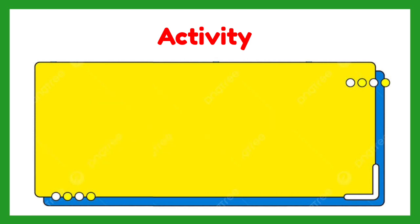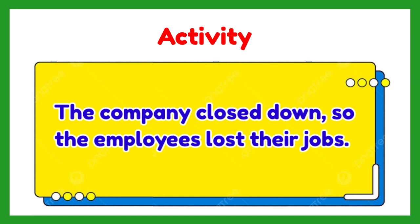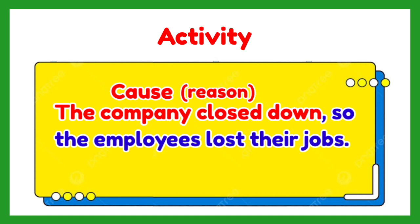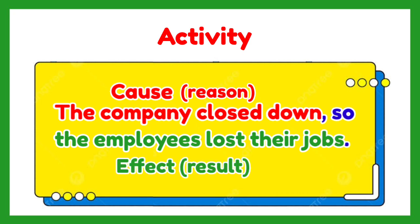Another one: 'The company closed down, so the employees lost their jobs.' The cause is: the company closed down — it is the first event and the reason why the employees had no more jobs. The result of the company closing down is that the employees lost their jobs, and this is the effect, introduced by the word 'so.'